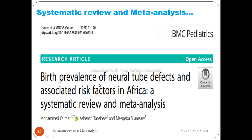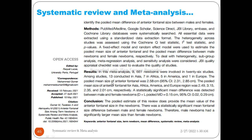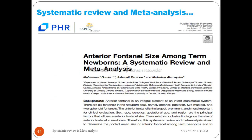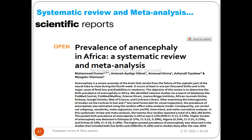Some meta-analyses combine prevalence estimates, others combine associations such as odds ratios, and others combine means - for example, the mean size of the antrum was 2.58 centimeters. Some papers have two objectives: one for prevalence and one for associated factors. These example papers illustrate what systematic review and meta-analysis looks like in practice, combining different types of numerical outcomes using different statistical techniques.